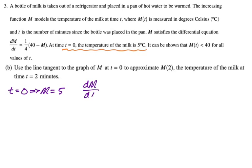So dm/dt such that m equals 5 is going to be 1/4, and then it's going to be 40 minus 5, which is just going to be 35 over 4. I'm not going to mess around with that. Last year, I made a mistake by oversimplifying, so I'm not going to simplify. So 35 over 4.